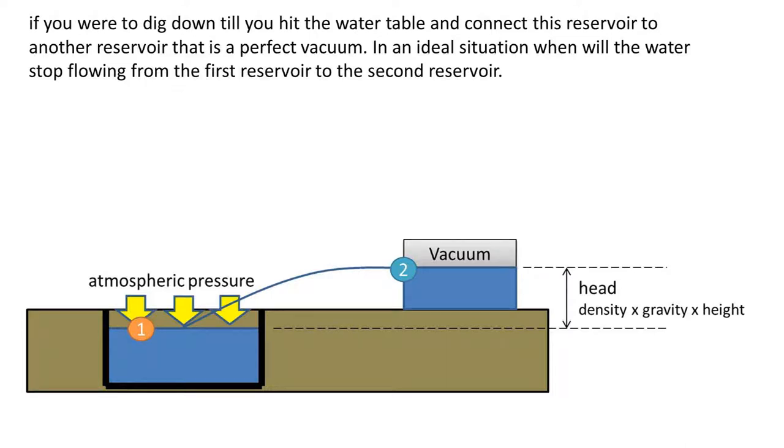I got a viewer request. The problem is, if you were to dig a hole down till you hit the water table and connect this reservoir to another reservoir that is a perfect vacuum, in an ideal situation, when will the water stop flowing from the first reservoir to the second reservoir?